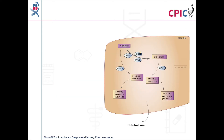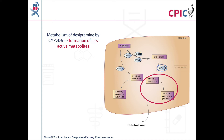This is the PharmGKB imipramine and desipramine pharmacokinetics pathway. A link to this pathway is provided in the description below this video. Desipramine is the active metabolite of imipramine and is itself available as a drug. It is metabolized by CYP2D6 to form less active metabolites.